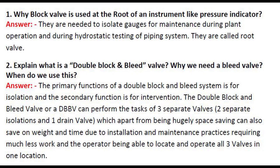Question 1: Why is a block valve used at the root of an instrument like a pressure indicator? Answer: They are needed to isolate gauges for maintenance during plant operation and during hydrostatic testing of the piping system. They are called root valves.